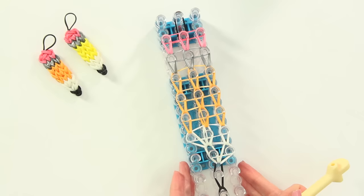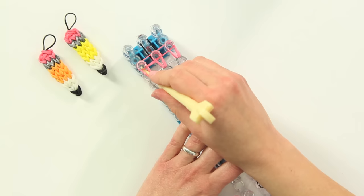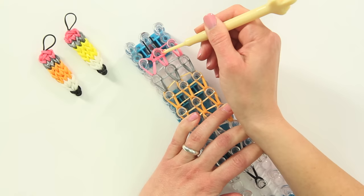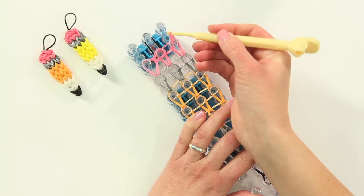So now we just have the top of the pencil to do. I'm going to go in from the left side and pull two bands to the center and then repeat on the right side, hooking two bands and bringing those to the center as well.